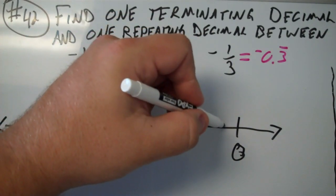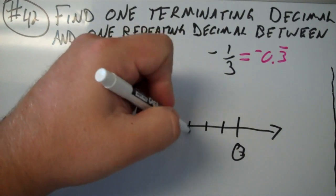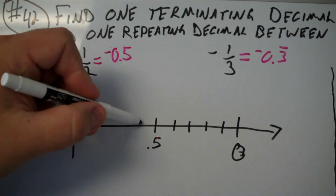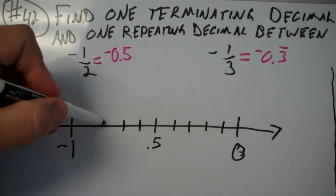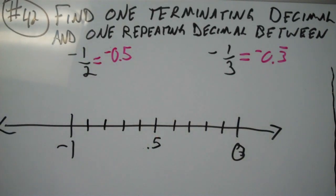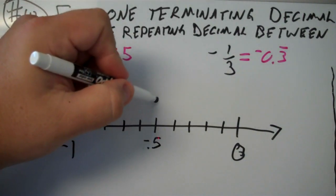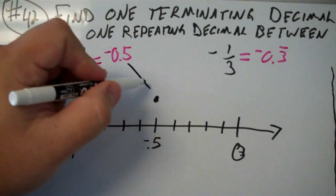And so that would mean this is 0.1, 0.2, 0.3, 0.4, 0.5. And I can continue over here, 0.6, 0.7, 0.8, and 0.9. So this first value is right here. That is negative 0.5, so that goes right there.